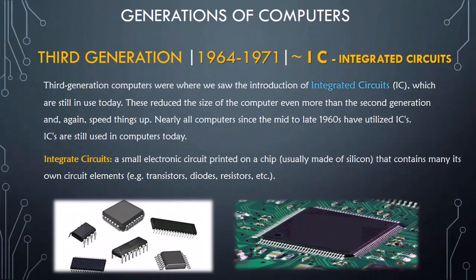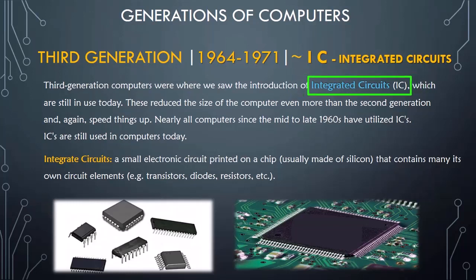The period of the third generation of computers was from 1964 to 1971. In the third generation, integrated circuits were introduced, which are still in use today. These integrated circuits reduced the size of computers even more than the second generation and sped things up. Nearly all computers since the mid to late 1960s have utilized ICs.